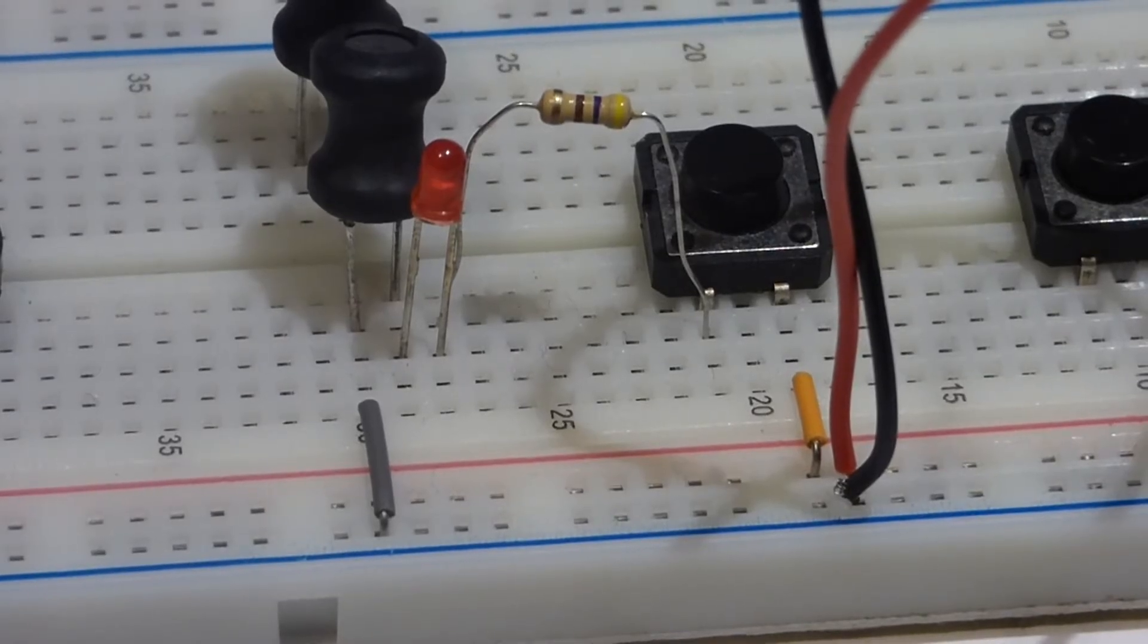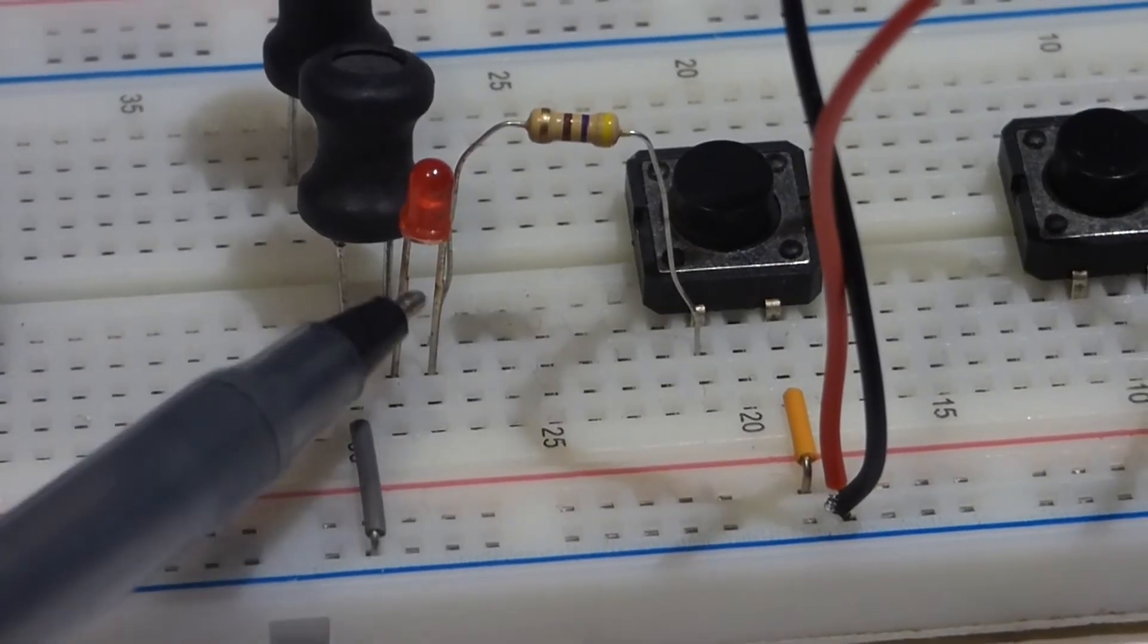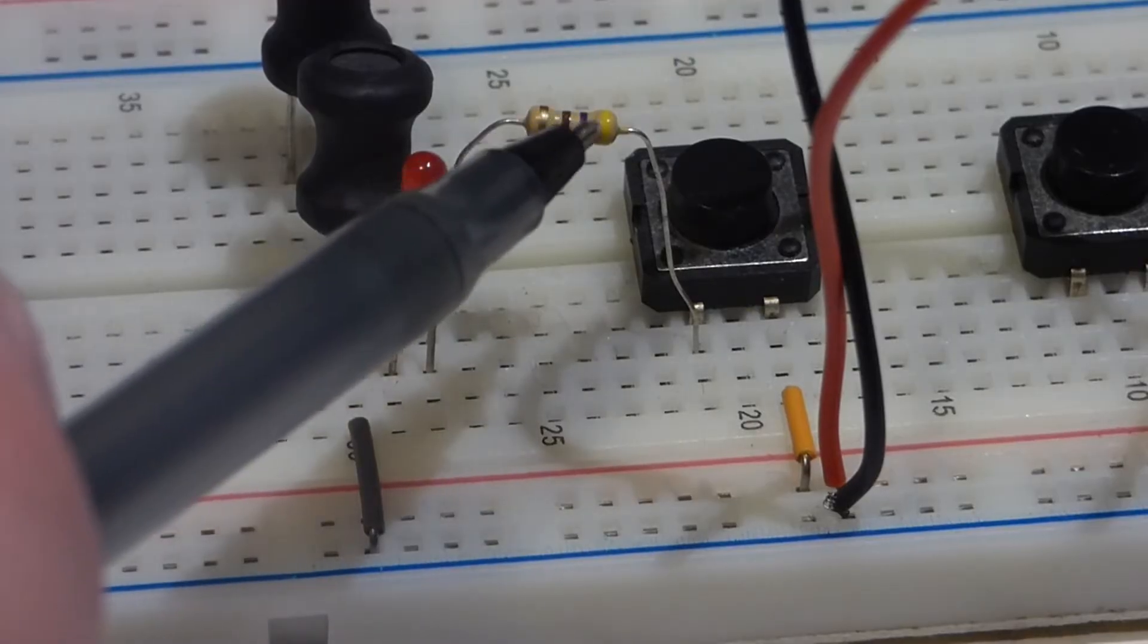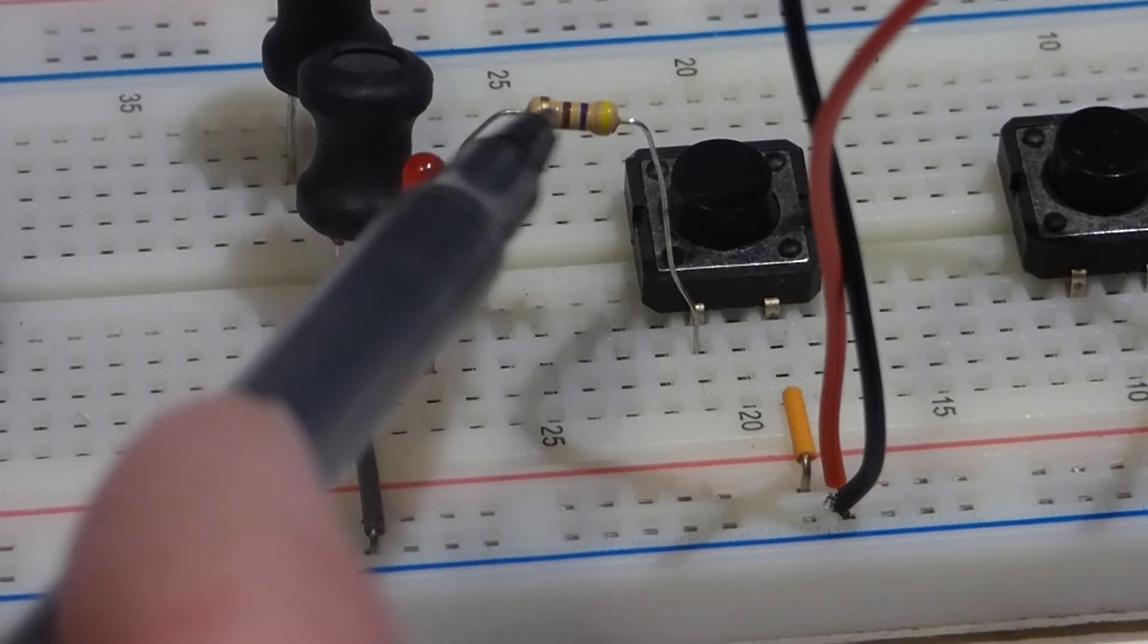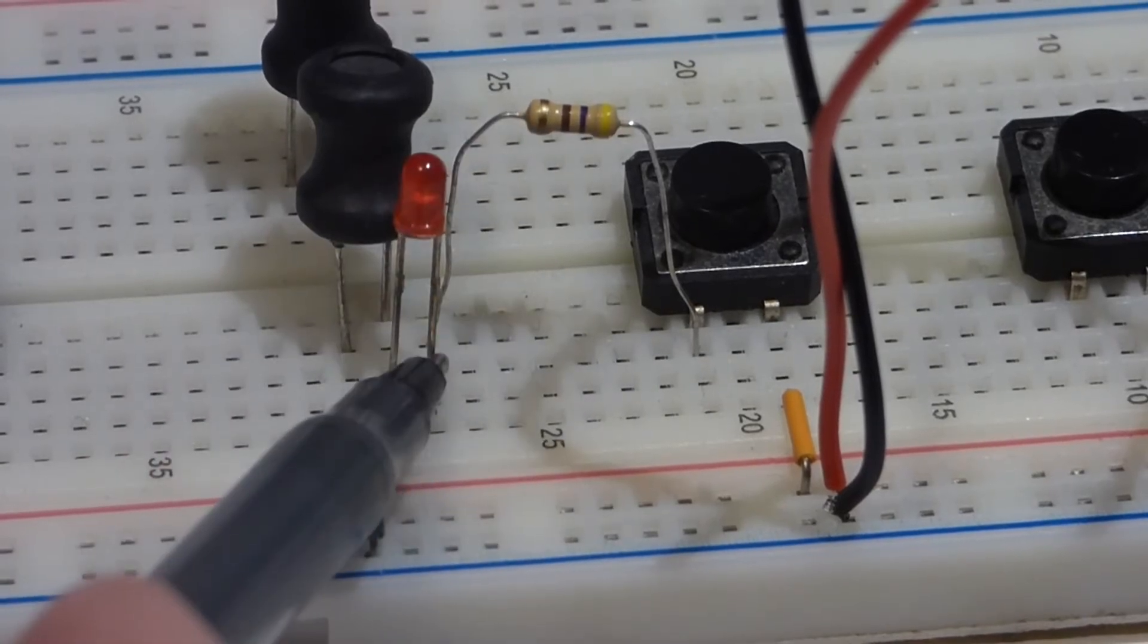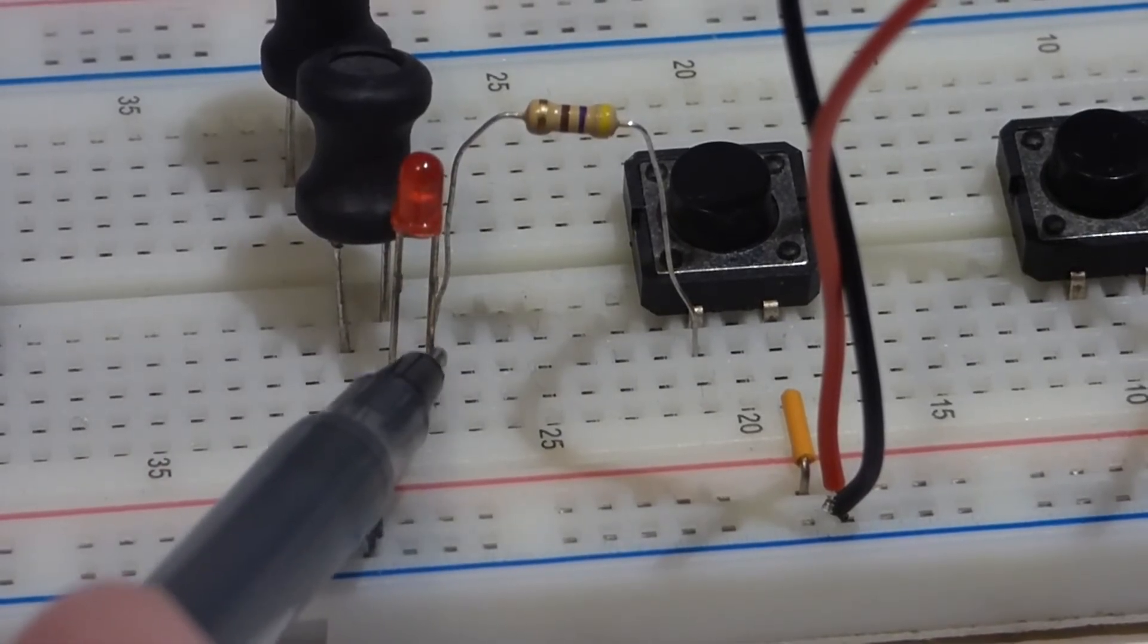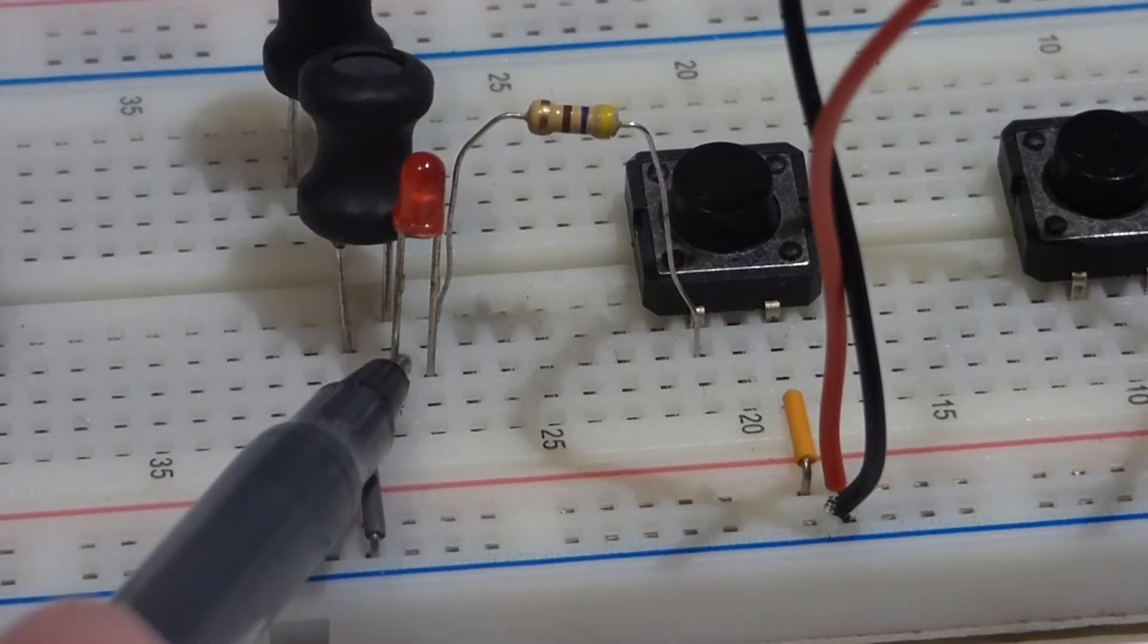Now we're going to do a demonstration circuit. All this is, is a simple LED circuit. We have a switch, and then connected to the switch is a protective resistor which connects to this side of the LED.